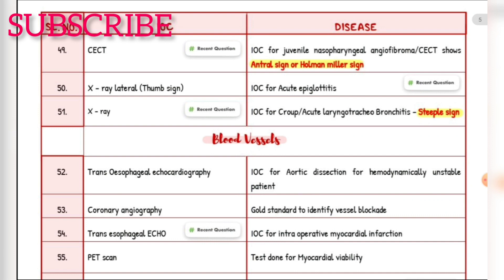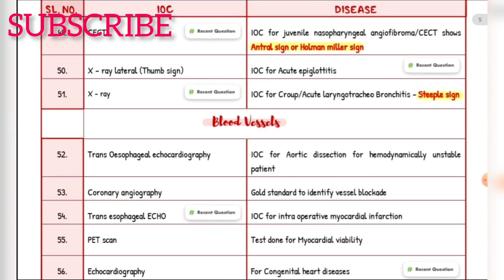Investigation of choice for acute epiglottitis — X-ray lateral, thumb sign. Investigation of choice for croup (acute laryngotracheobronchitis) — steeple sign on X-ray. Investigation of choice for aortic dissection in hemodynamically unstable patient — trans-esophageal echocardiography. Gold standard to identify vessel blockage — coronary angiography.